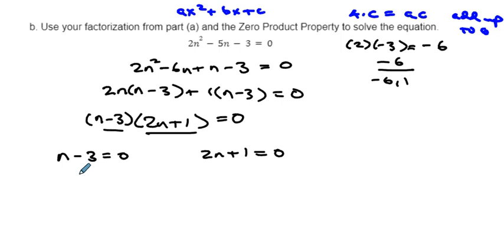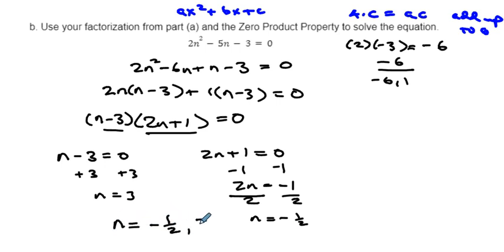So I got n minus 3. So I'm going to add 3 to both sides. And then you get n equals 3. This one, we're going to subtract 1 from both sides and get 2n equals negative 1. And then my last step is to divide each of them by 2. And you get n equals negative one half.